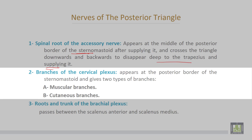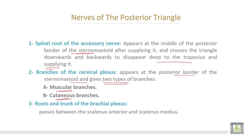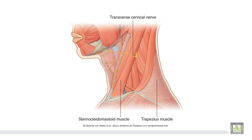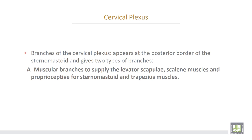Number two, branches of the cervical plexus appear at the posterior border of the sternomastoid and give two types of branches: muscular branches and cutaneous branches. Muscular branches supply the levator scapulae, scalenus muscles, and provide proprioceptive fibers for the sternomastoid and trapezius muscles.